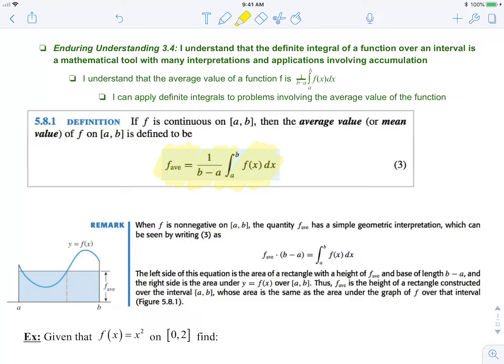Geometrically, the average value is the height of a rectangle constructed over the closed interval whose area is the same as the area under the graph of f over that same interval.